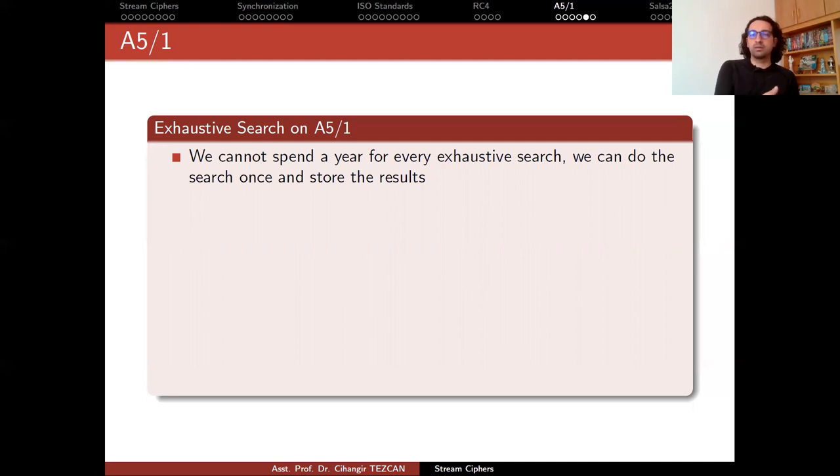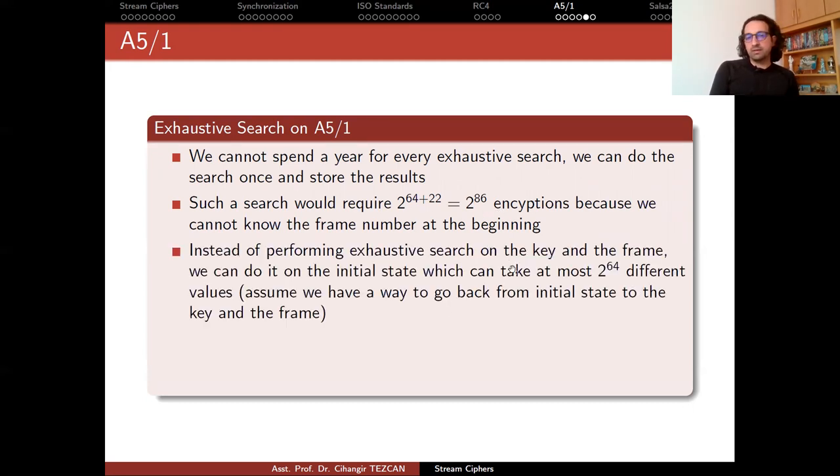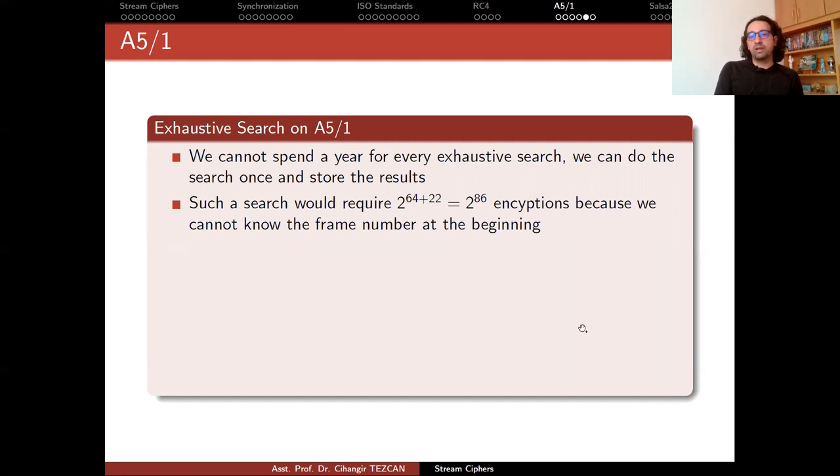So the idea is to do the exhaustive search only once and store the results in a clever way so that whenever we capture a key stream, we can just look at our tables and see what key is used. Such a search would require actually 2 to the 86 encryptions. This is because we have also 22-bit frame number, which we don't know before the communication. So if you want to make a full list of key streams, you can have this many different key and frame numbers. Instead of performing exhaustive search on the key and frame, we can do it on the initial state, which can take at most 2 to the 64 different values.